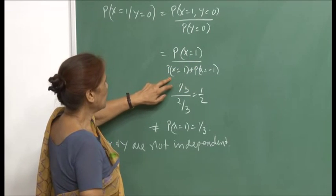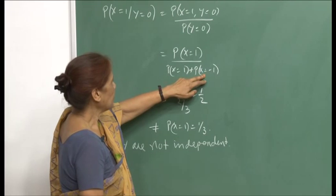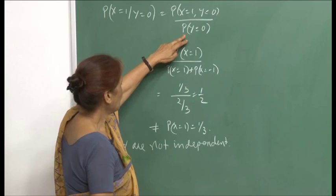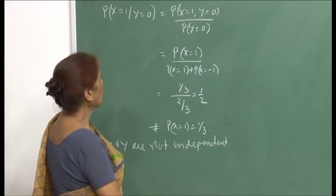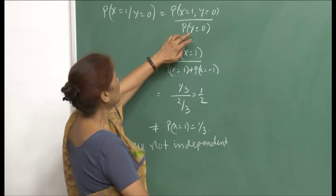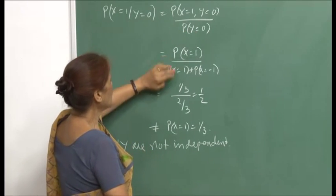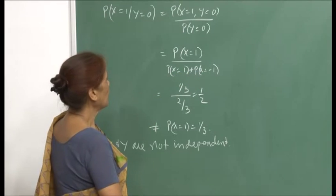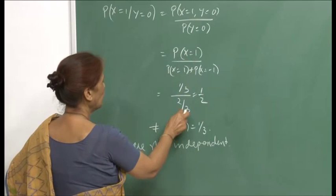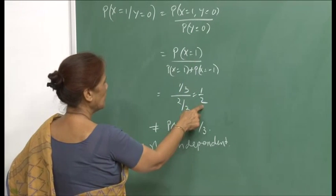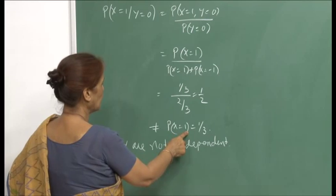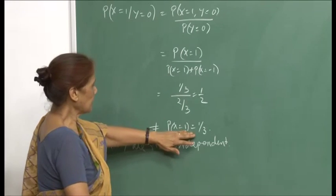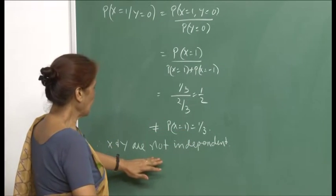Y equals 0 when X is not 0, meaning X takes values 1 and minus 1. So this is (1/3) divided by (2/3), which equals 1/2. But this is not equal to P(X=1). If X and Y were independent, this conditional probability should equal P(X=1). Therefore, X and Y are not independent.